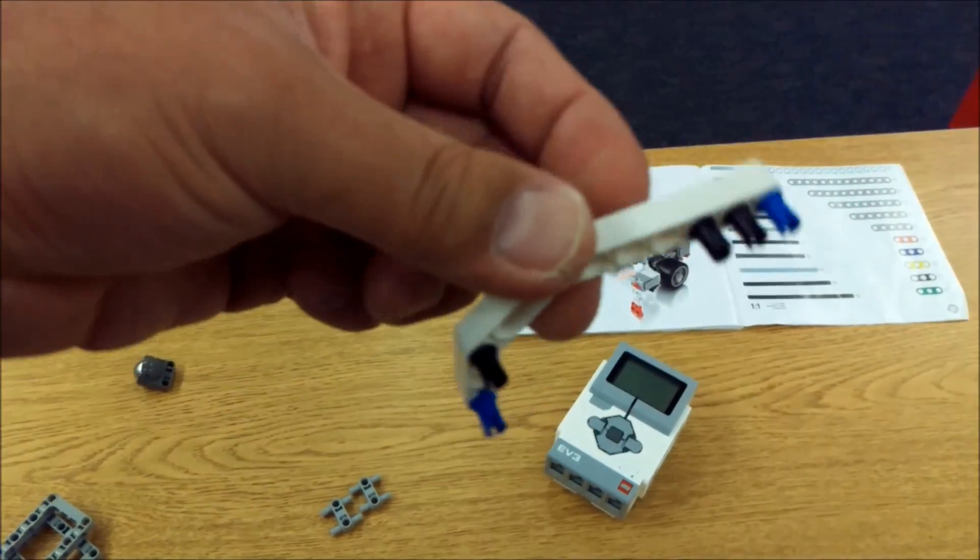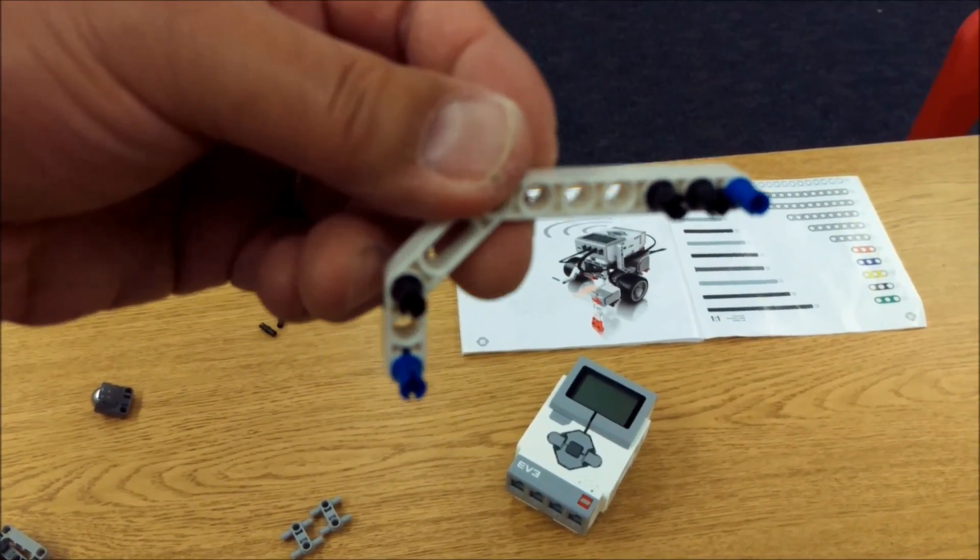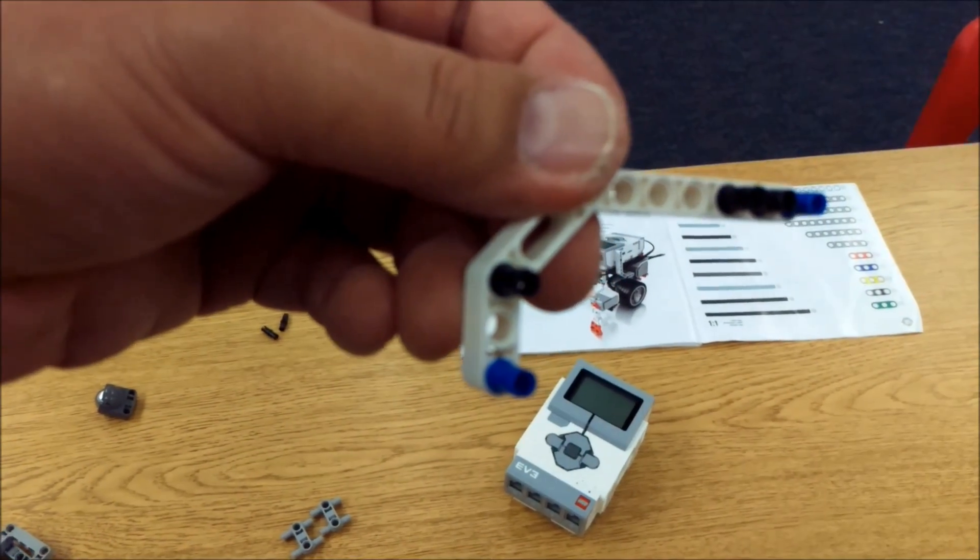So let me go ahead and show you again how this looks. So one blue, two black. Sorry about that. And then one black and one blue down here for your color sensor.